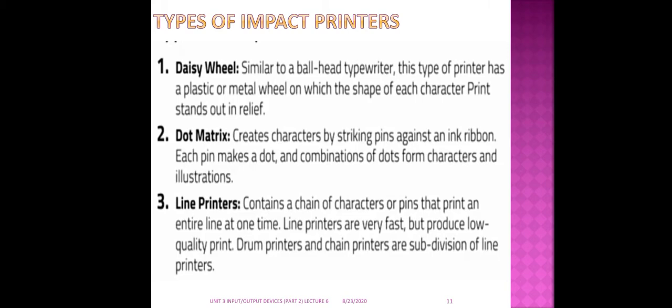There are different types of impact printers. First, the daisy wheel, which consists of a plastic or metal wheel on which the shape of each character is printed. Second is the dot matrix, which gives output in the form of dots — similar to how we used alphabets for tracing in dot form. Third is line printers, which output an entire line at a time.